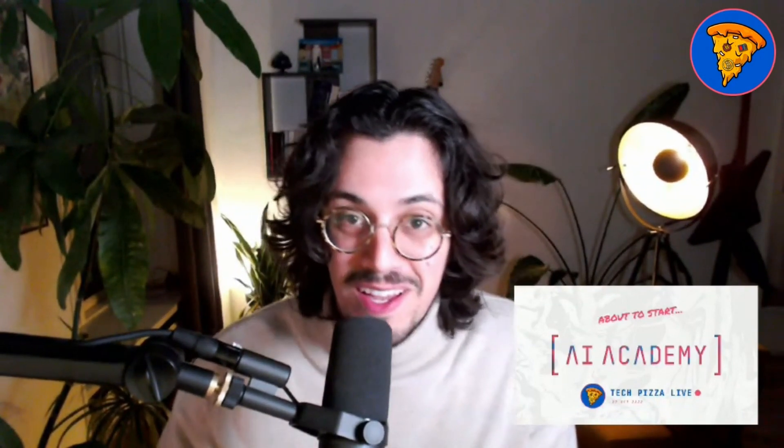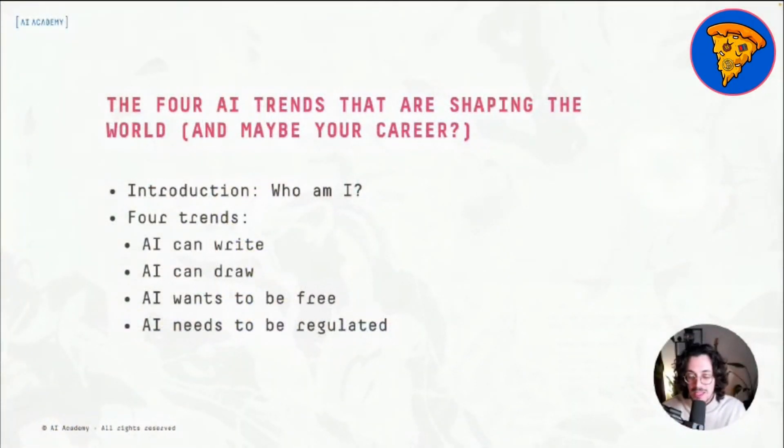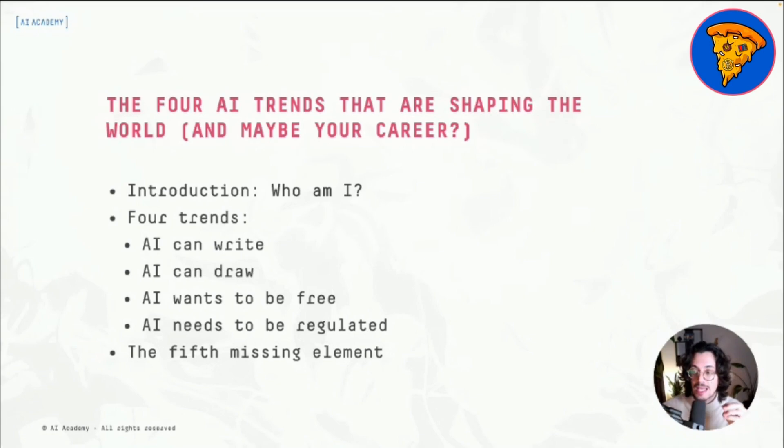Welcome everybody to this first Tech Pizza Live. Here's the program: we're going to spend roughly half an hour to 45 minutes together. We'll talk about who I am, then four trends that really matter in AI: AI can write, AI can draw, AI wants to be free, and AI needs to be regulated. Finally, we'll talk about what the fifth missing element is — what is missing for AI to really be used and appreciated by the whole world.